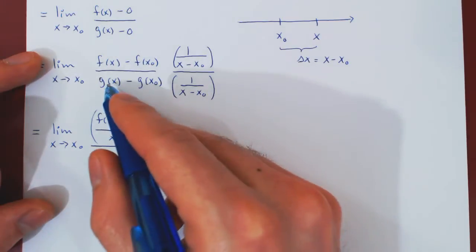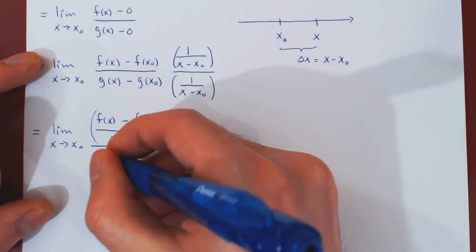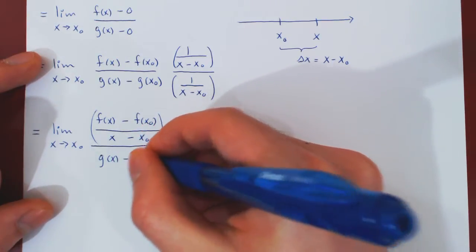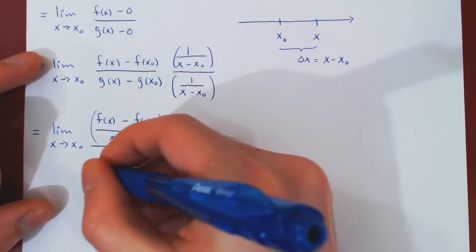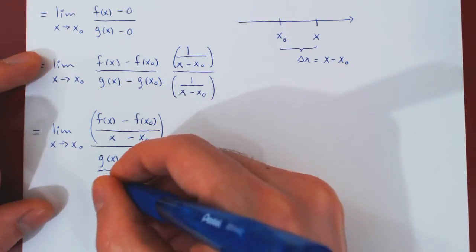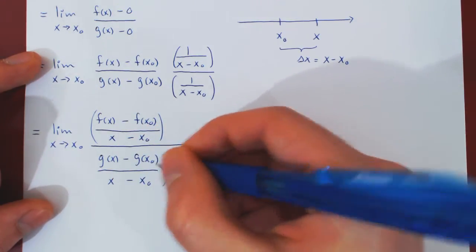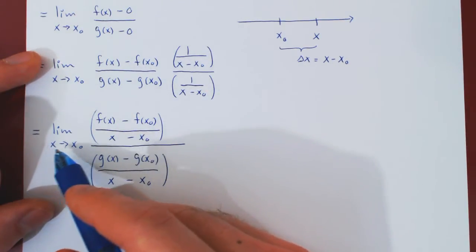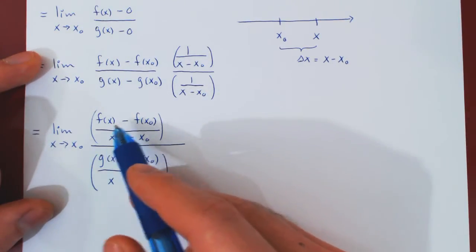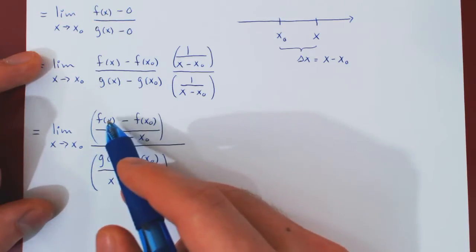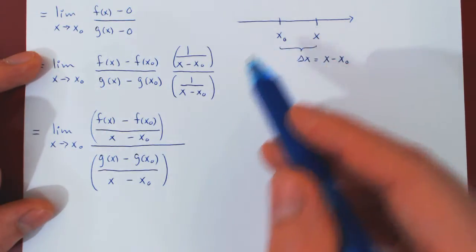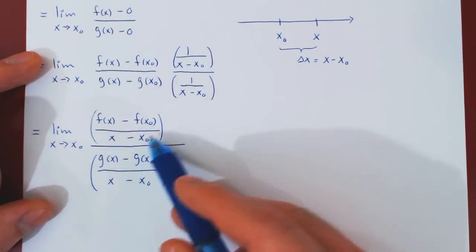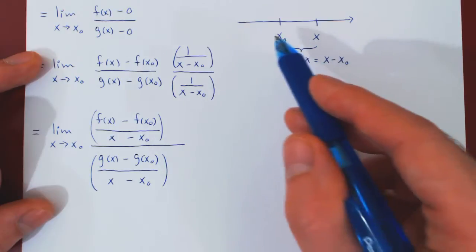The numerator becomes [f(x) - f(x₀)]/(x - x₀). As x approaches x₀, we have on top the change in y for f—the value of f at x minus the value of f at x₀. So the change in y in f over the change in x, x - x₀.